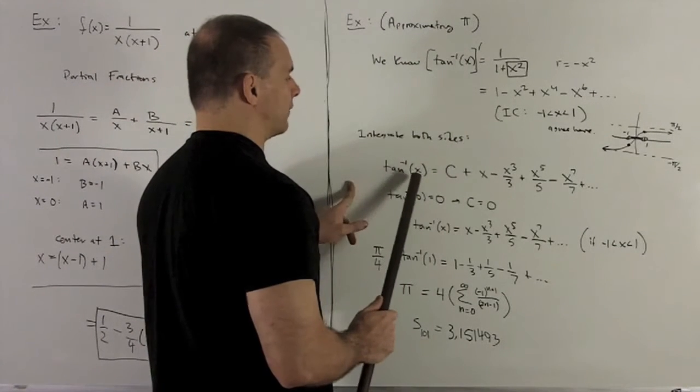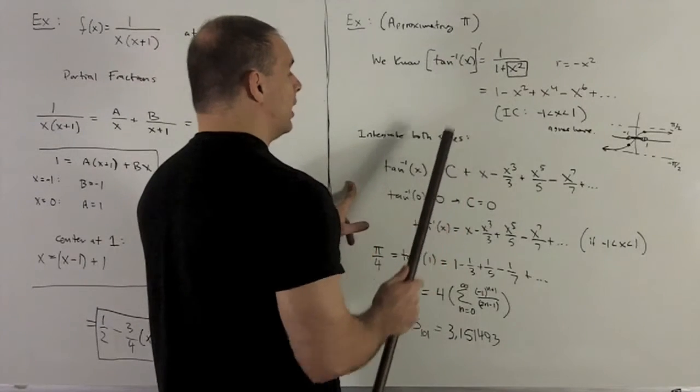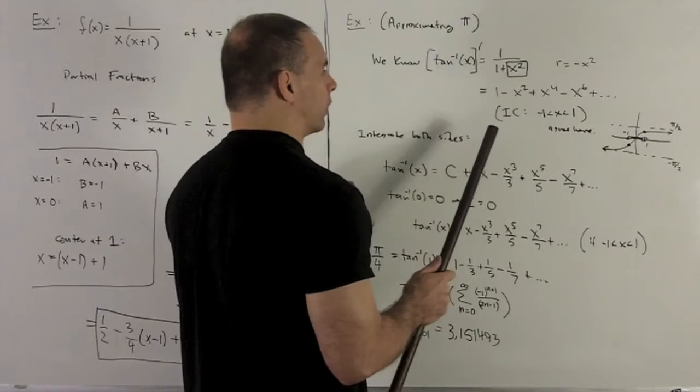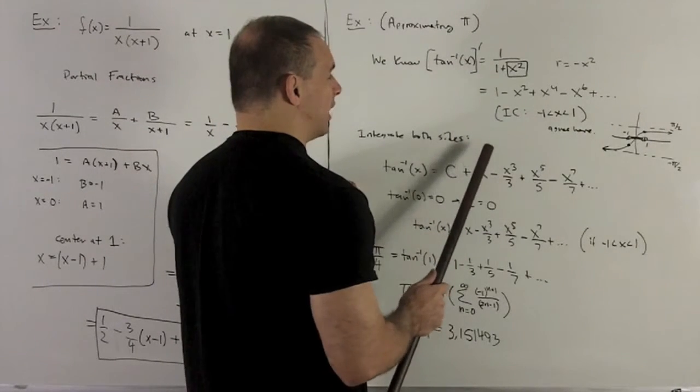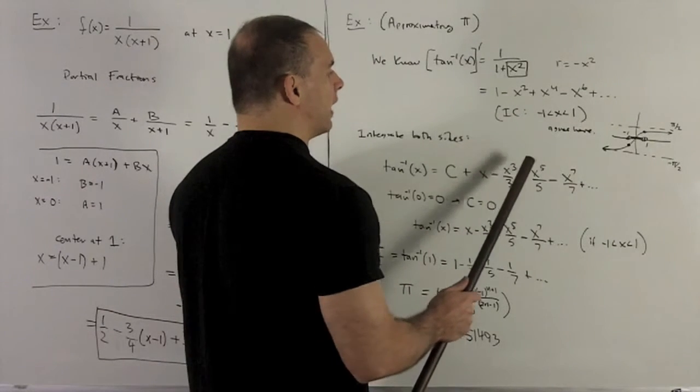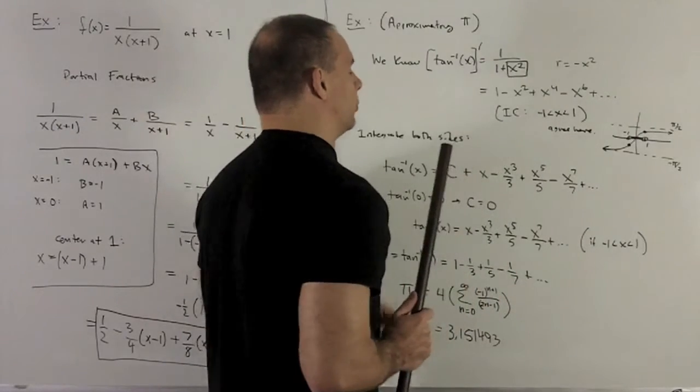Taking the antiderivative of this side, we're just going to get a constant of integration, and then the rule is add 1 and flip it over. For the 1, we just turn that into x, and then add 1 and flip it over. x cubed over 3, x to the 5th over 5, x to the 7th over 7, and then you put your signs in with the same pattern.